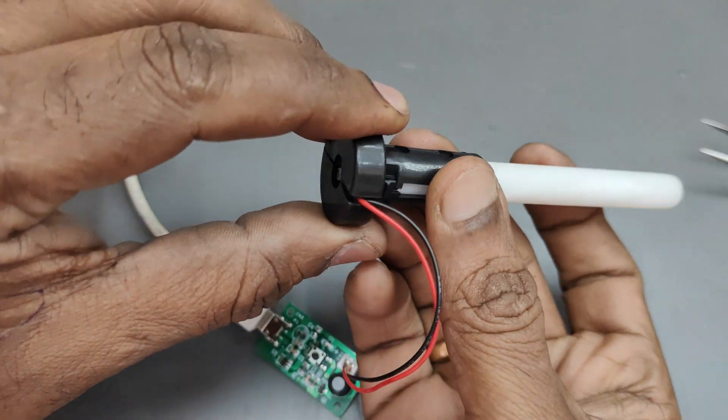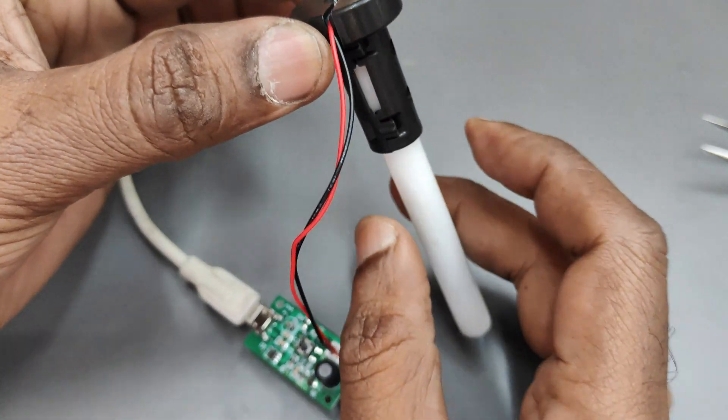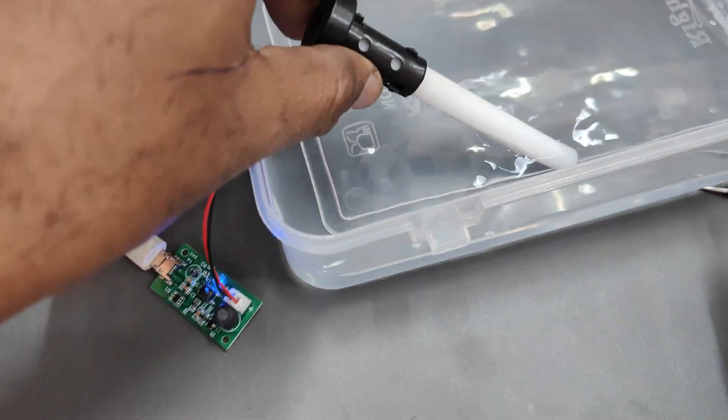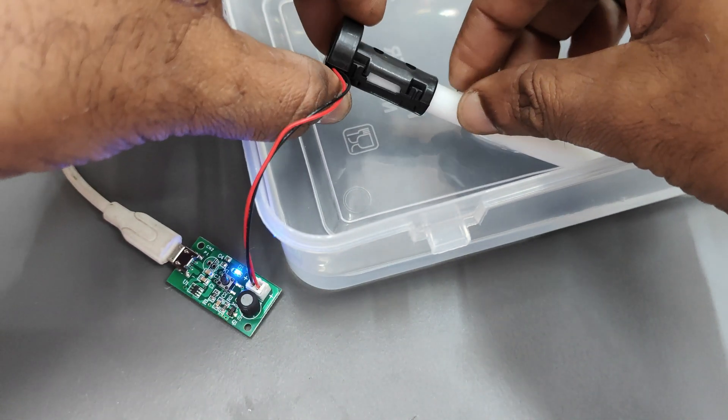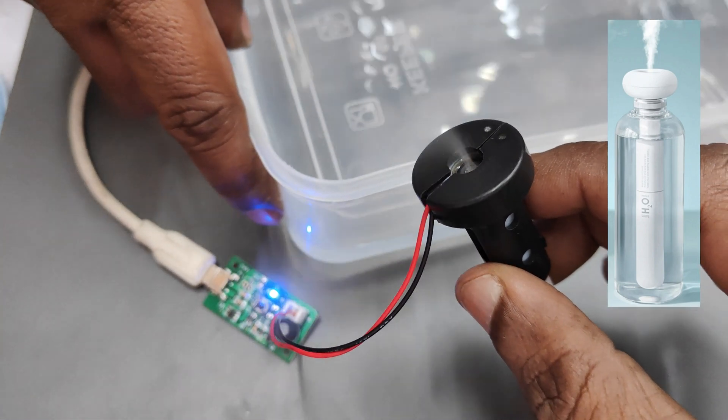Now press the push switch, the power switch, that is a mode switch. It will operate in continuous mode. You can see the blue LED. If mist is not there, soak properly the wick into the water. Now you can see the burst of mist.